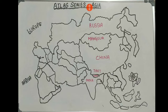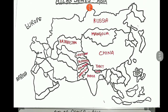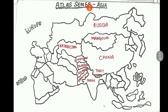From bottom to top: India, Nepal, Tibet, China, Mongolia, Russia. Repeat with me: India, Nepal, Tibet, China, Mongolia, Russia. From here we go upwards: Pakistan, Afghanistan, Kazakhstan, Kyrgyzstan, Tajikistan.